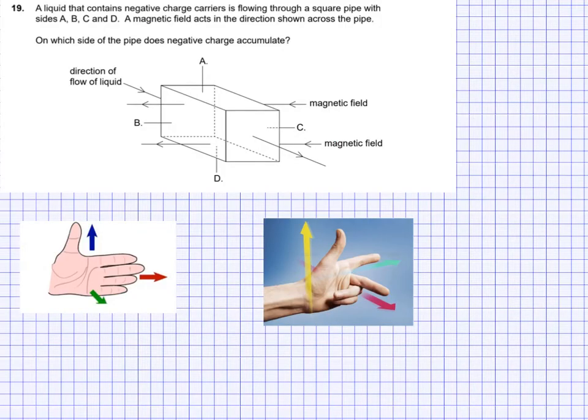Question 19. We have a liquid containing negative charges that flow through this pipe, this square pipe. There's obviously four sides to the square pipe, A, B, C and D. And then we have this magnetic field that's acting across the board. There's a field that penetrates the pipe. The diagram represents the direction of the liquid flow.